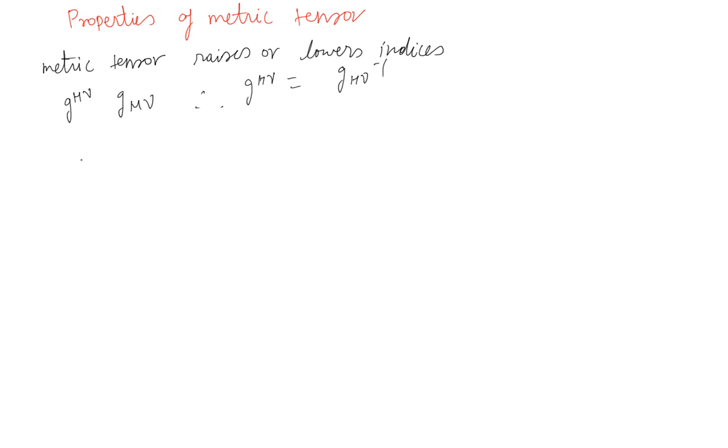It's a tensor which means it should transform like this. It transforms like this and it's a tensor because it follows this condition. Moreover, it depends on the geometry of the problem.